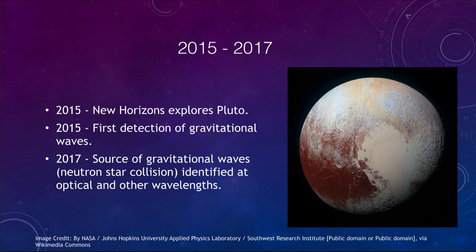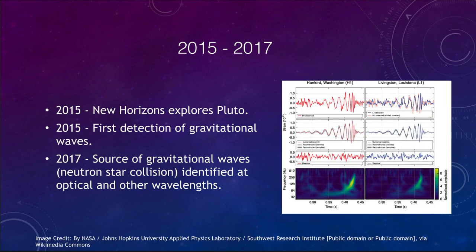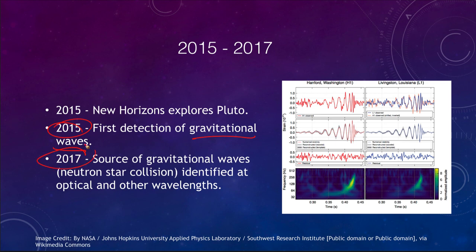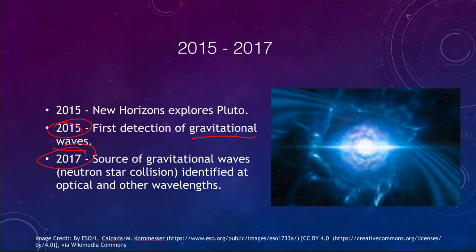Also in 2015 came the first detection of gravitational waves — a prediction of Einstein's general relativity from about a hundred years earlier, but too faint to detect until we had sensitive enough instruments. We detected gravitational waves from two colliding and merging black holes. Then in 2017, we identified gravitational waves from colliding neutron stars, and were able to observe the event not only in gravitational waves but also in optical and other wavelengths.